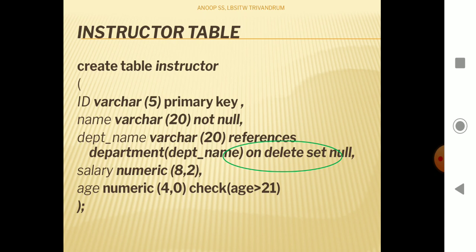Now consider another case: suppose the instructor table was created with a different CREATE TABLE query. In the previous example the instructor table had department_name as a foreign key referencing department. But now we are going to specify an extra clause on the foreign key: ON DELETE SET NULL. This means whenever a DELETE query occurs on the parent table, the database has to allow the delete and then set the referring values in the instructor table to NULL.